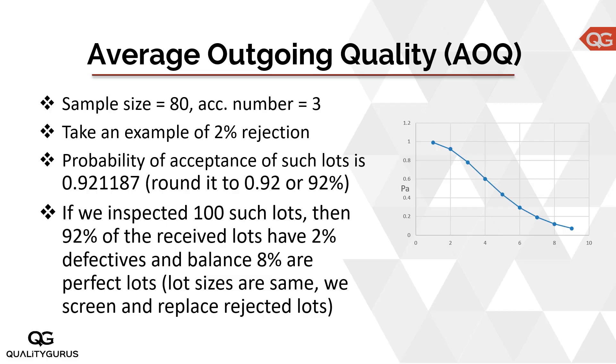What we want to find out is: what is our average outgoing quality through this sampling process? In this example, we have a sample size of 80 and an acceptance number of 3. If the number of defectives is 0, 1, 2, or 3, we accept the lot; if it's more than that, we reject the lot.